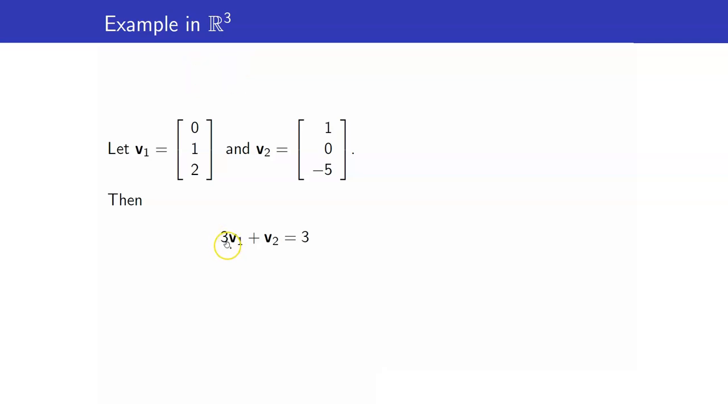If I form 3V1 plus V2, so that means 3 times V1, that's my V1, and I add V2, that one, what will I get? So this is 1 and then 3. This is 6 minus 5, we get 1. This vector V here is a linear combination of V1 and V2.